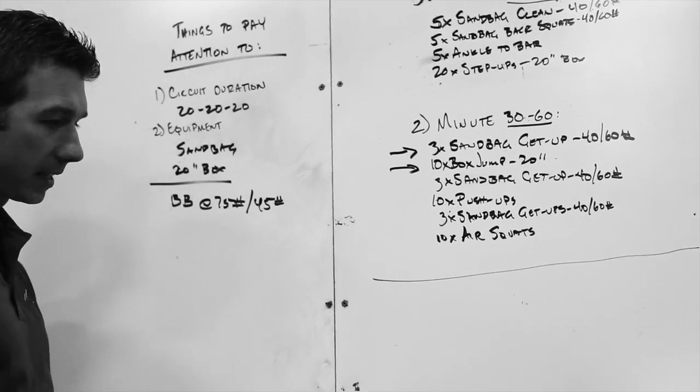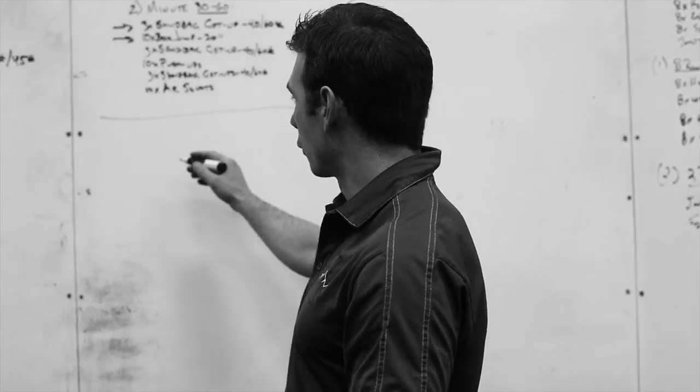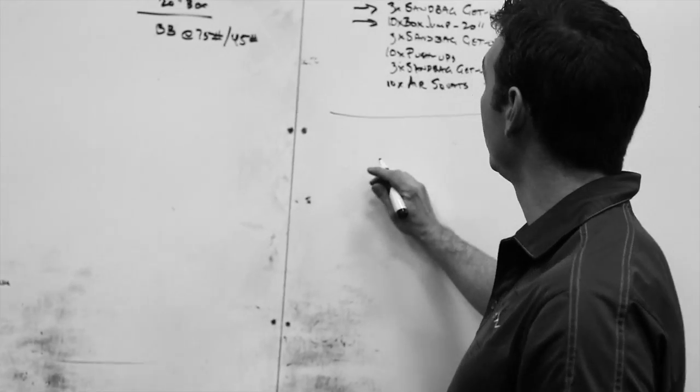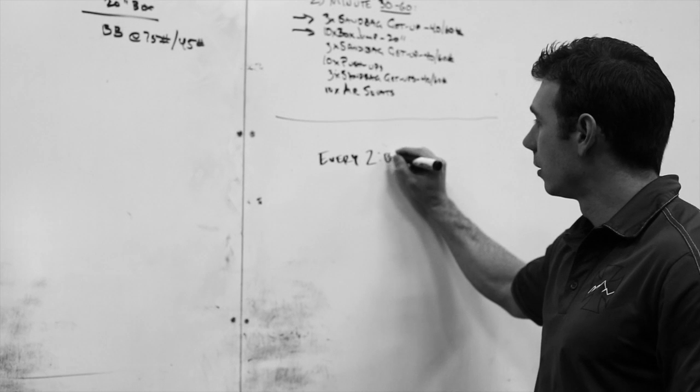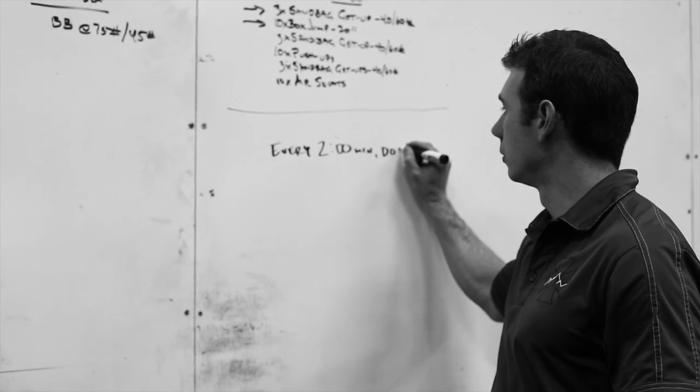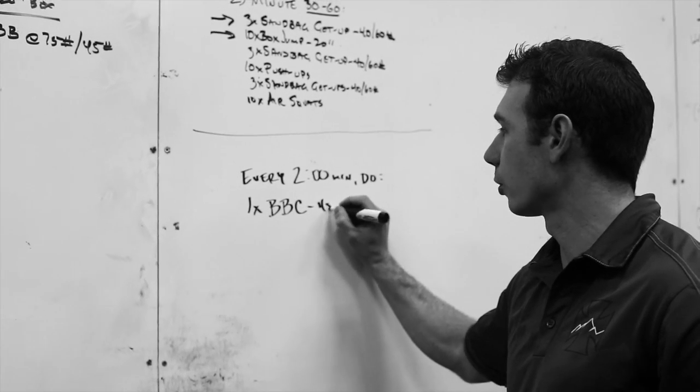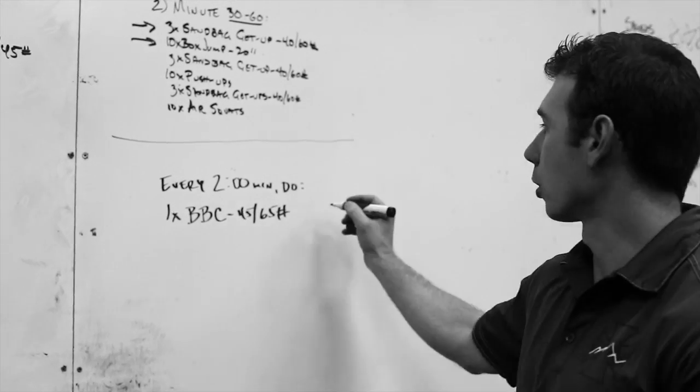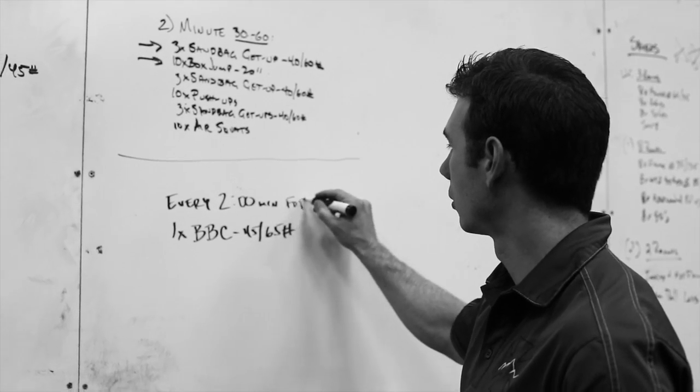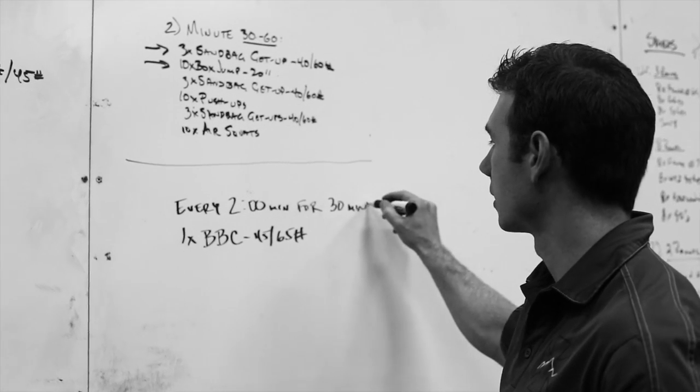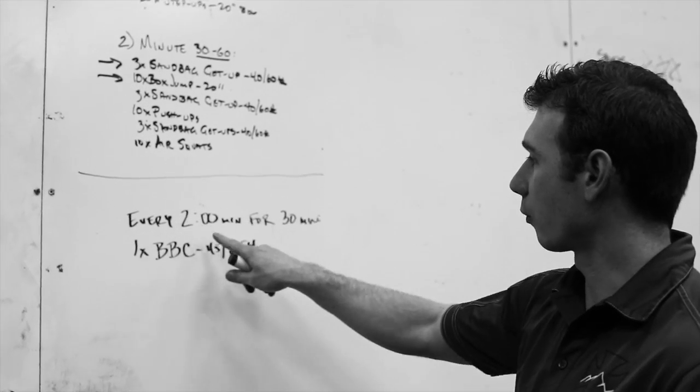Now there are some other formats that we like to use that give you some rest but structure the time really explicitly. For example, we could have you do a circuit here where we say something like every two minutes do one barbell complex at 45 to 65 pounds. So it would be every two minutes for 30 minutes, something like that.